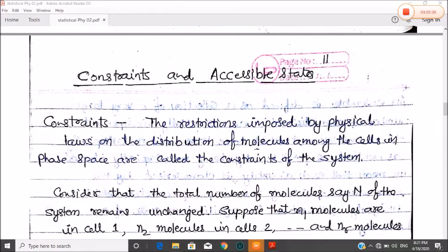Next we are now discussing degrees of freedom. In classical mechanics we have studied the number of degrees of freedom. There are restrictions which oppose that motion, and the final result is that the number of degrees of freedom is 3n, and if the constraint is f, then it is 3n minus f. Total number of degrees of freedom minus the number of constraints. It is the same definition. The constraint is the restriction imposed by the physical laws on the distribution of molecules among the cells in the phase space, which are called the constraints of the system.